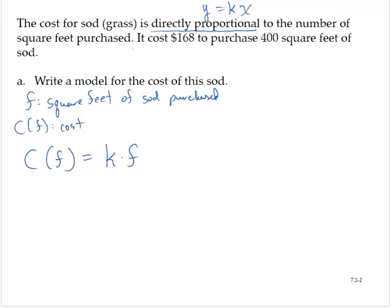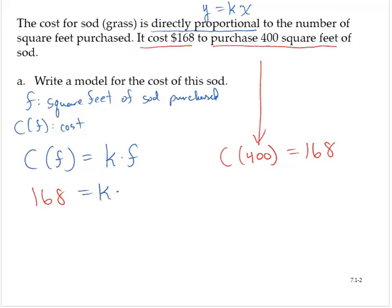So now we're going to use the other piece of information. It cost $168 to purchase 400 square feet. So that means that C(400) is 168. So then substituting, we have 168 is equal to k times 400.